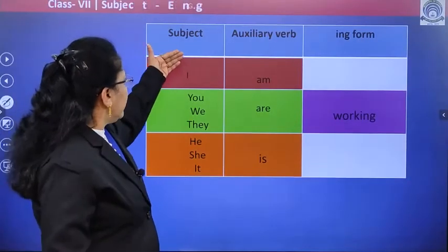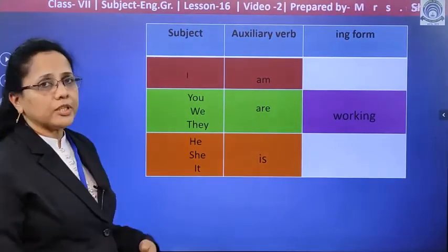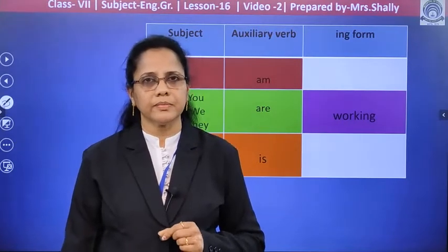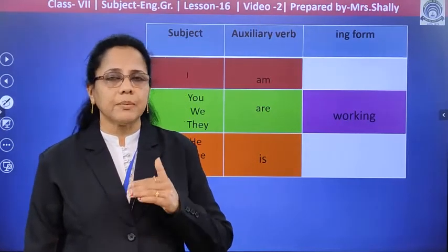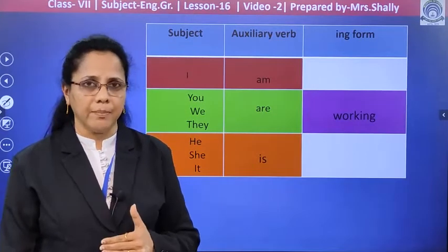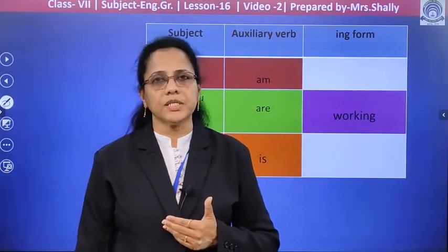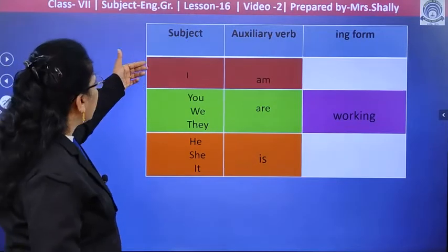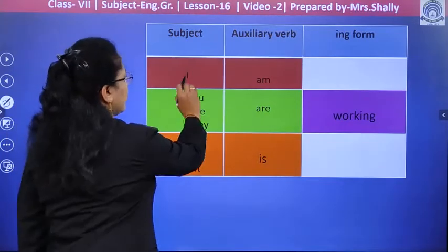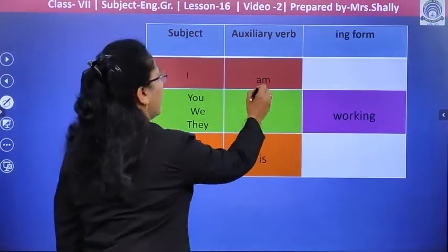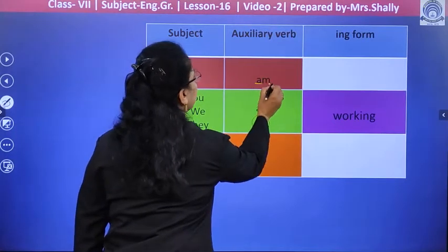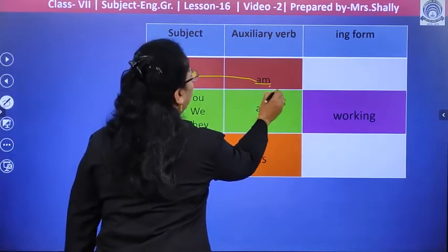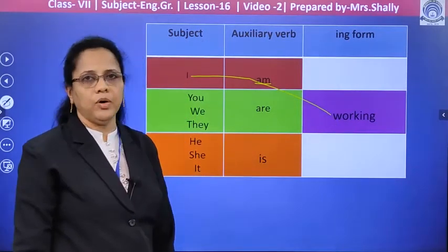If the subject is singular we use 'is', and with the subject 'I' we use 'am'. Look at the table given here. With the subject 'I', the auxiliary verb 'am' is used. So: I am working.